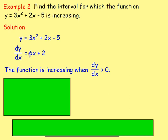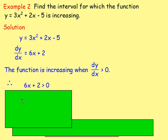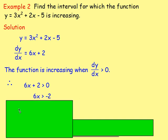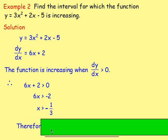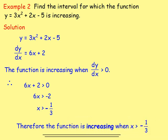So we set dy/dx — that is, 6x plus 2 — to be bigger than 0. Solving for x: subtract 2 from both sides, divide by 6, and you get x is bigger than negative one third. Therefore, the function is increasing when x is bigger than negative one third. For any value bigger than negative one third, substituting into the derivative always gives a positive result.